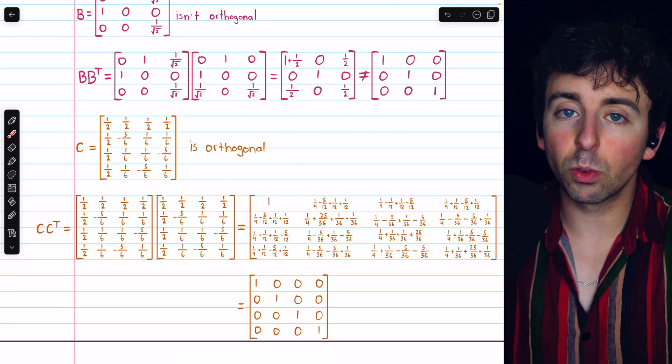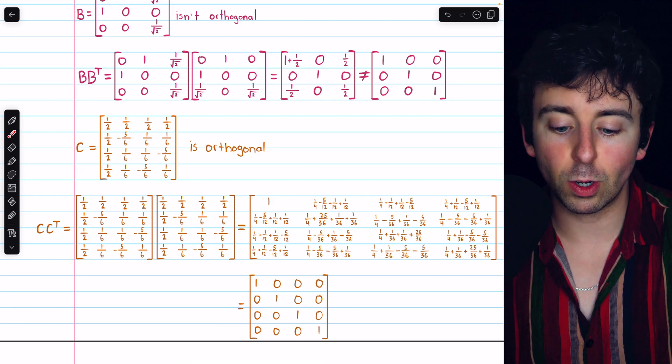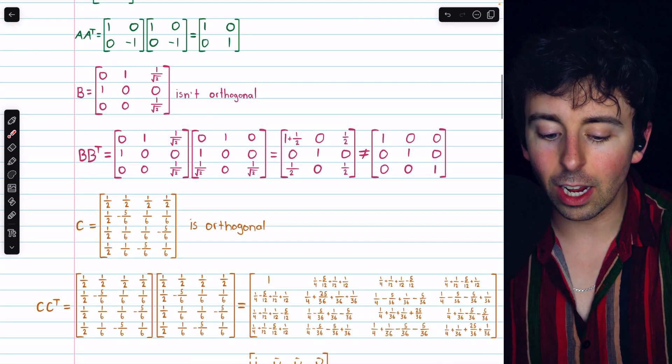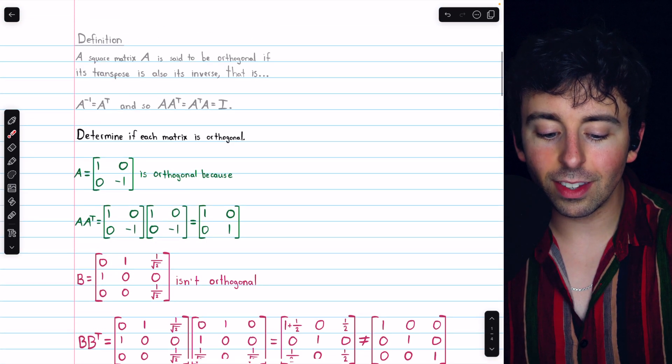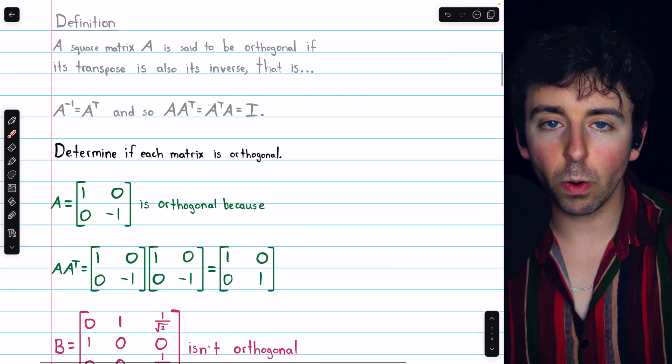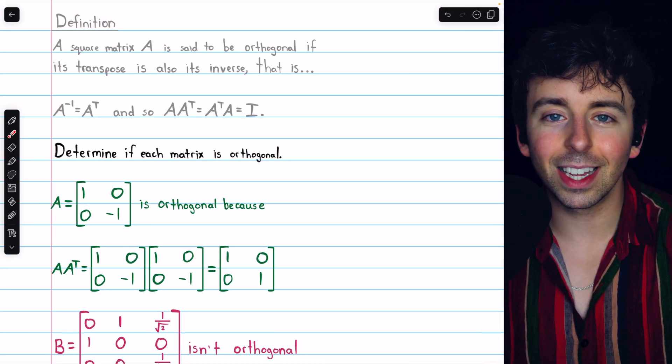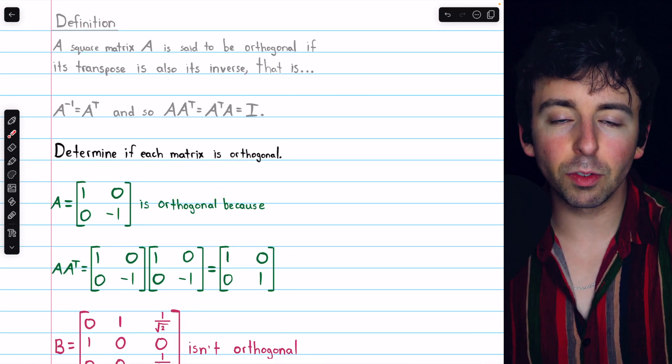So that's how to check if a matrix is orthogonal, just multiply it by its transpose and see if you get the identity. Let me know in the comments if you have any questions, and be sure to check out my linear algebra course and linear algebra exercises playlists in the description for more. Thanks for watching.